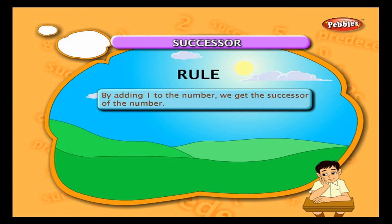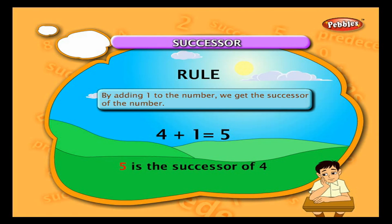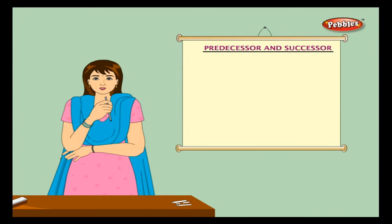The successor of a number is found by adding one: 4 plus 1 equals 5, so 5 is the successor of 4. Thus we find the predecessor and successor for numbers.